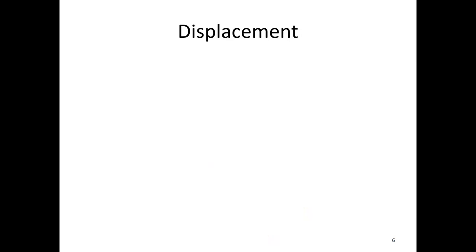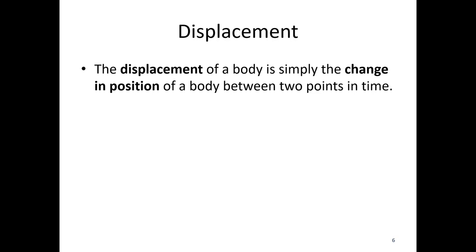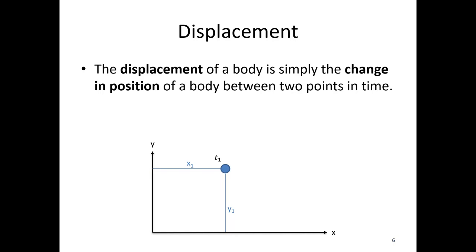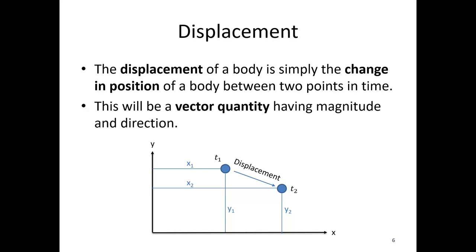Next up is displacement. The concept of displacement is simply the change in position of a body between two points in time. If a particle is at x1, y1 at time one, and moves to x2, y2 at a later time, the displacement is the difference between those two positions — however far it moved between time one and time two. This is a vector quantity, having both a magnitude and direction, so we need to know not only how far the particle moved but in what direction.